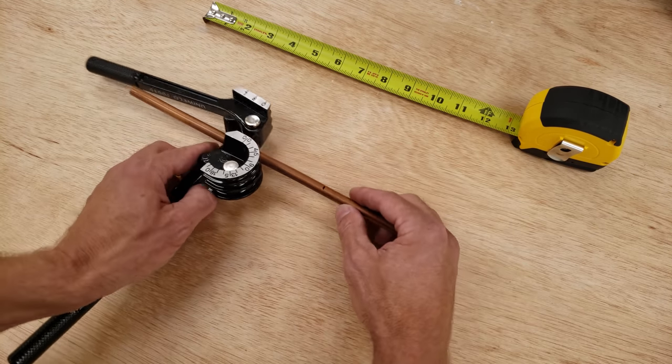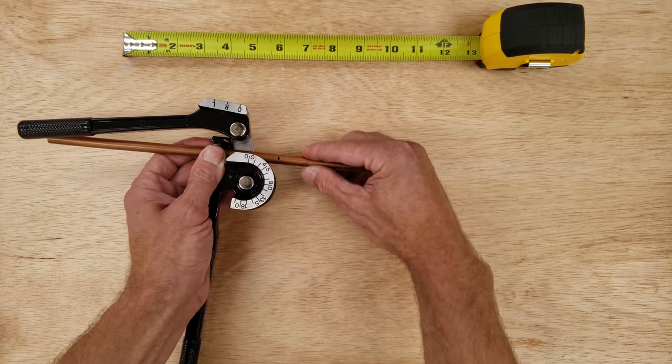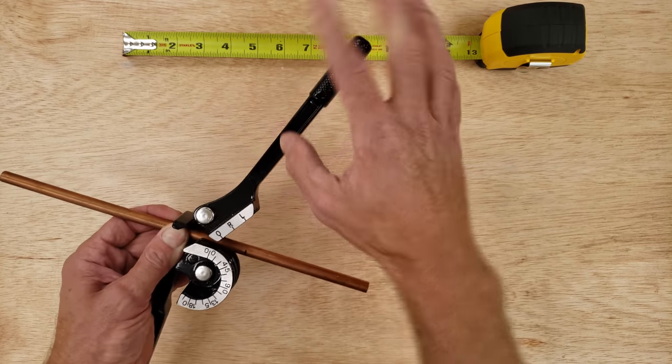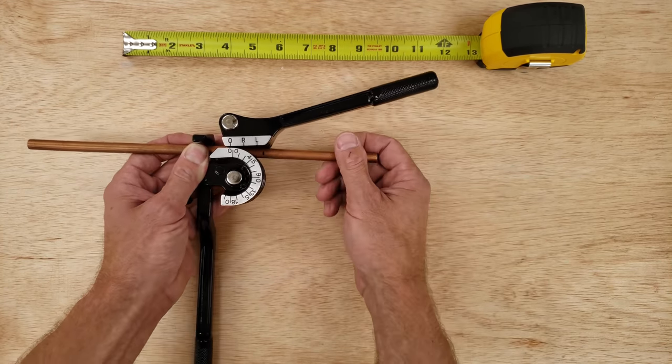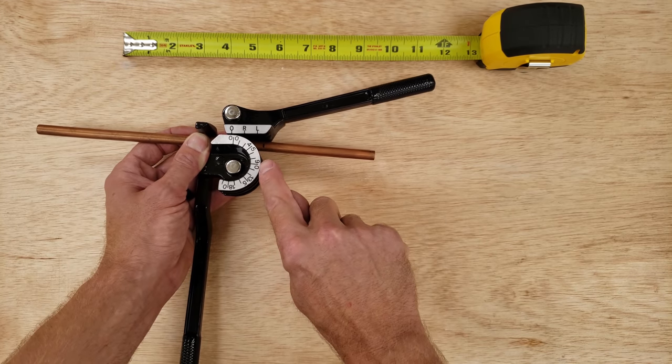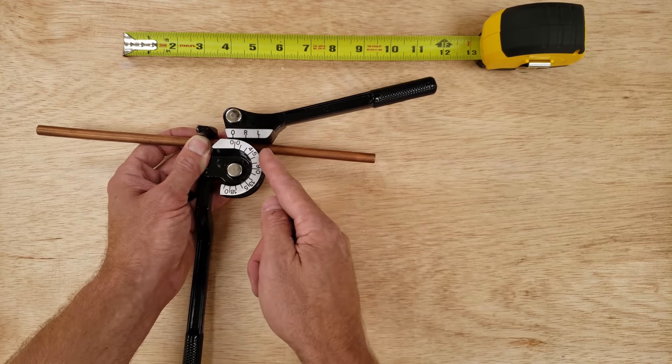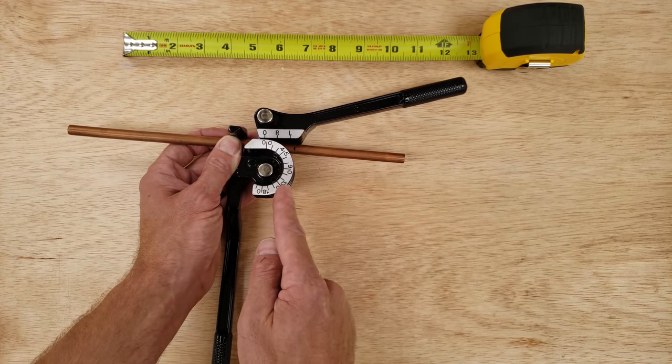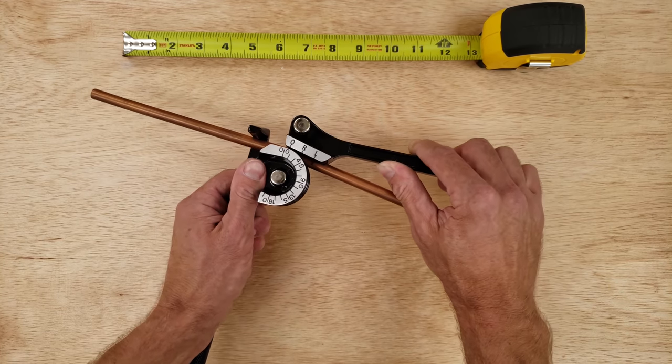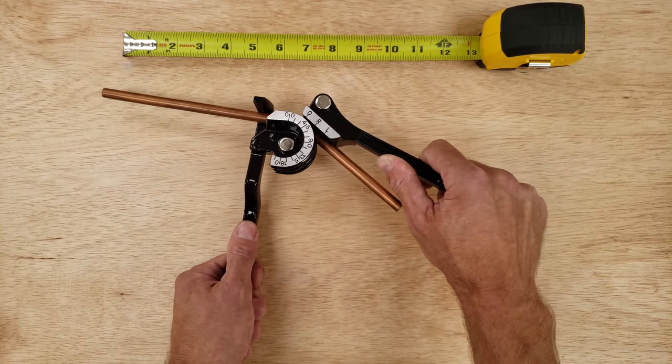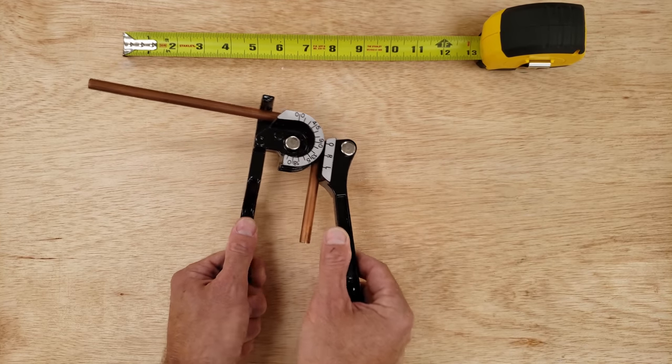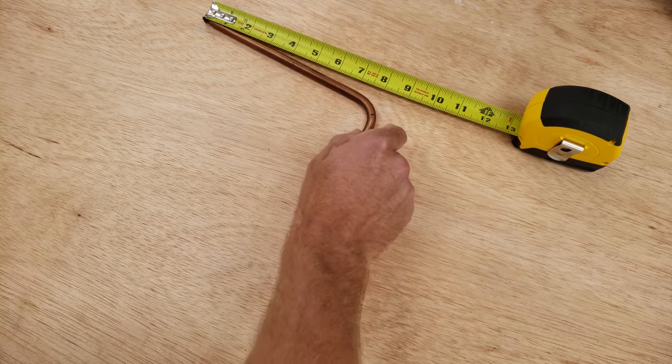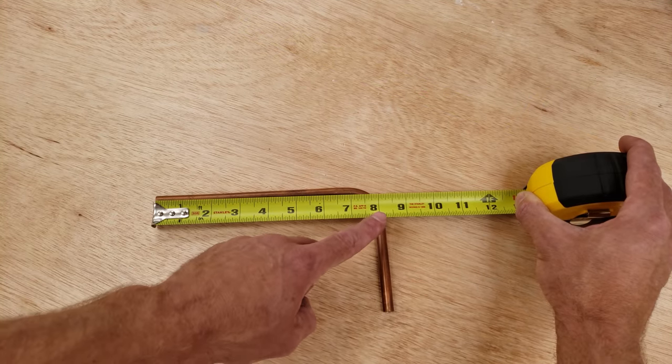We're going to slip it in here and make sure that this mark is right on the edge of this. We're going to fold this over and verify that mark is in line with the edge. When we're done, we're going to measure from here to the center of our 90 degree bend and it's going to be eight inches. So here we go, we're going to bend this right to 90 degrees. As you can see, that eight inches is right in the center.